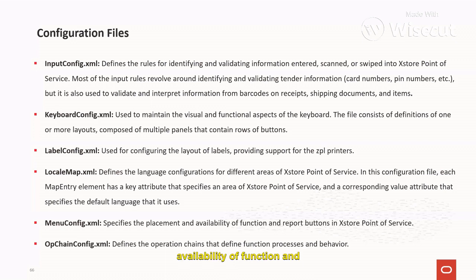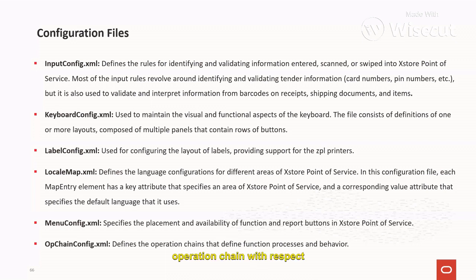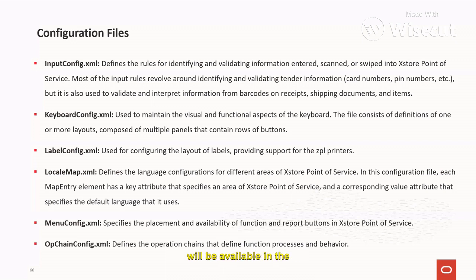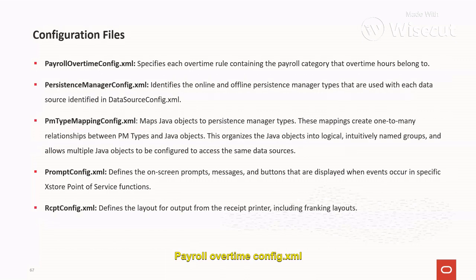The menu_config.xml file specifies the placement and availability of function and record buttons in Access Store Point of Service. The option_config.xml file is a very common and important file — it defines the operation changes for specific options, including how operations are defined and executed, providing the complete flow of execution.